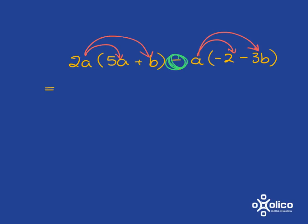2a times 5a gives me 10a squared. 2a times b gives me 2ab. Then a minus times a minus gives me a plus, so I get plus 2a. And remembering the minus again: minus times a minus gives me a plus, so I get plus 3ab.